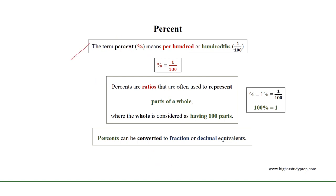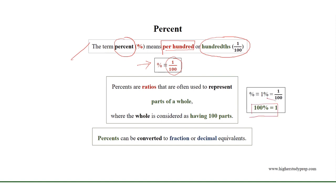The term percent means per hundred or hundredths. Therefore, percent is equivalent to 1 over 100. So, 100% is equal to 1.